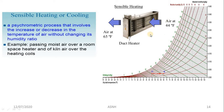For sensible heating, consider a duct heater with heating coils. Air passes through the heating coil to increase its temperature — for example, from 44°F to 65°F. The psychrometric process involves an increase or decrease in air temperature without changing the specific humidity ratio.